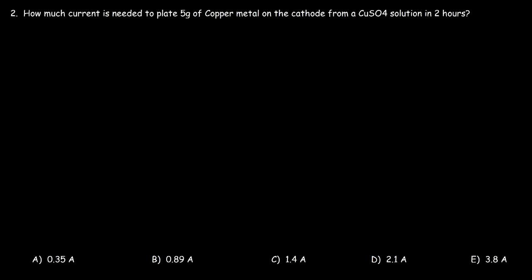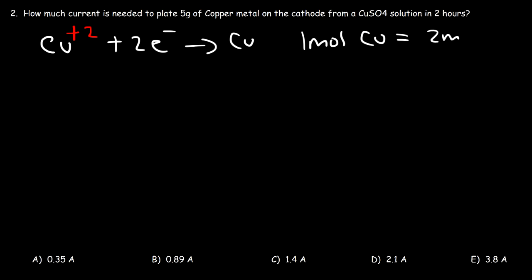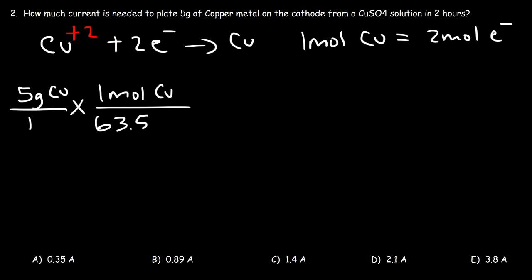Problem 2: how much current is needed to plate 5 grams of copper metal on the cathode from a copper sulfate solution in two hours? Let's write the reduction reaction: copper two-plus picks up two electrons and is reduced to copper metal. One mole of copper is associated with two moles of electrons. Since we need to calculate the current, start with the 5 grams of copper and convert to moles using the molar mass of 63.55 grams per mole.